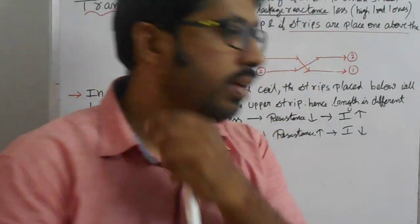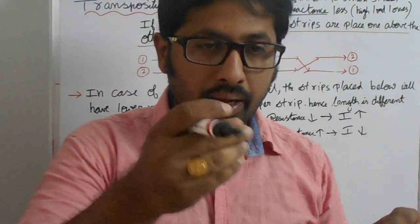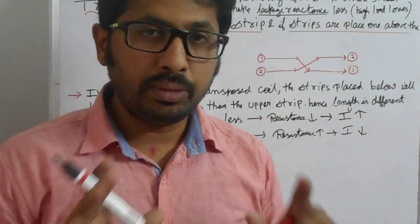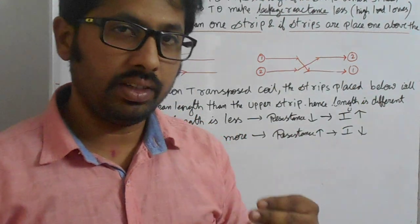Hence, in LV winding, always when we are doing spiral winding, we have to do transposition for making the load losses less.